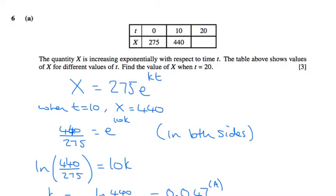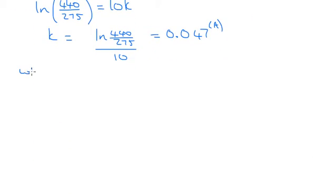And therefore, when t equals 20, X is going to equal 275e to the 20k.